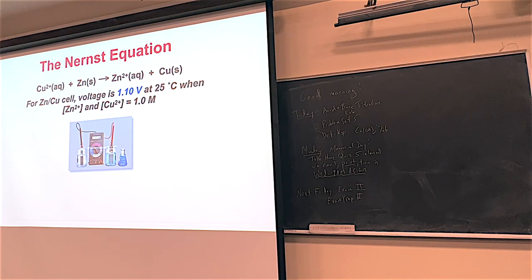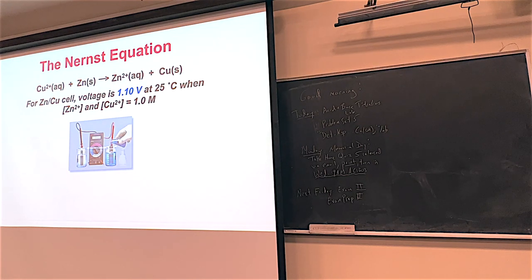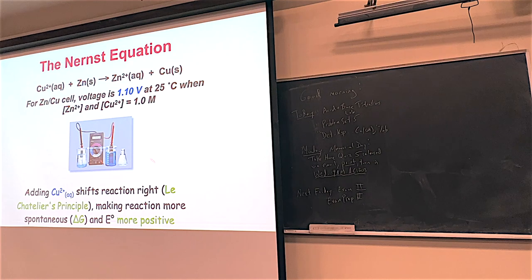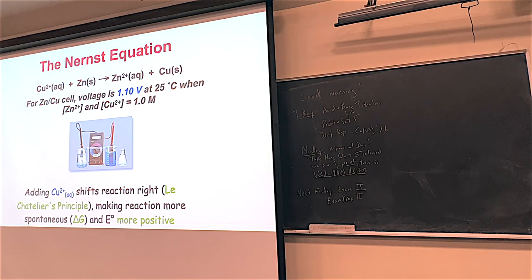A zinc-copper cell shows a potential equal to the standard potential of 1.10 volts when both zinc and copper are in solution at the same concentration. If more copper ion is added to the cathode compartment solution, the cell potential increases. Initially you have one mole per liter of Cu2+ and Zn2+. The Cu2+ has a cool blue color. Assuming 25°C, the cell voltage is 1.10 volts. Then they added more copper 2+, more of the blue stuff.